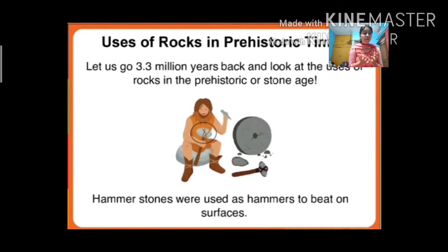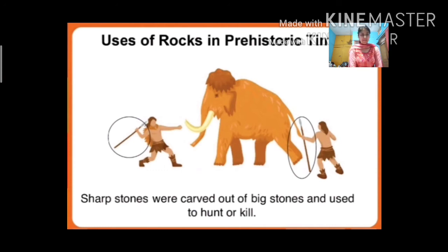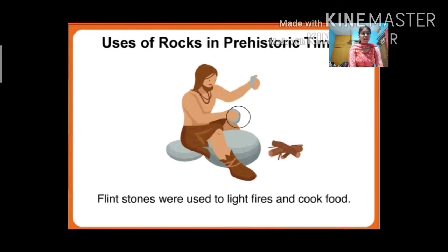In the stone age, early humans used rocks in several ways. Hammer stones were used as hammers to beat on surfaces. Sharp stones were carved out of big stones and used to hunt or kill animals — early humans gave them a sharp shape just for hunting.